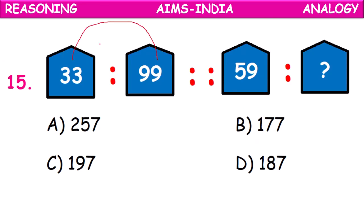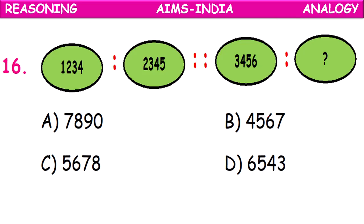33 is to 99: we multiplied by 3. So 59 times 3: 9 times 3 equals 27, 5 times 3 equals 15 plus 2 equals 17 — so 177. Option B is the correct answer. Next pattern: 1, 2, 3, 4 is related to 2, 3, 4, 5. Starting from 1, four numbers; starting from 2, next four numbers. Then 3, 4, 5, 6 is related to 4, 5, 6, 7. Option B: 4, 5, 6, 7 is the correct answer.